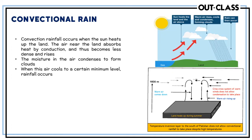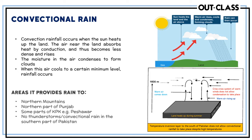Next is convectional rainfall. Convectional currents represent a very regular process of rainfall. The sun heats up the land, the air near the land absorbs heat by conduction and rises, the moisture in the air condenses in the form of clouds, and as the air cools down to a certain level, rainfall occurs.